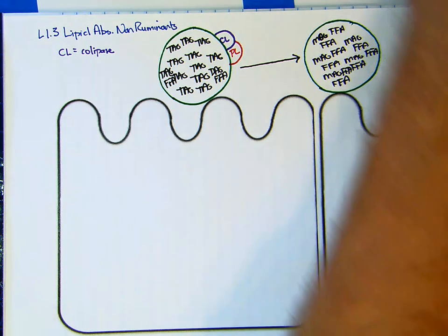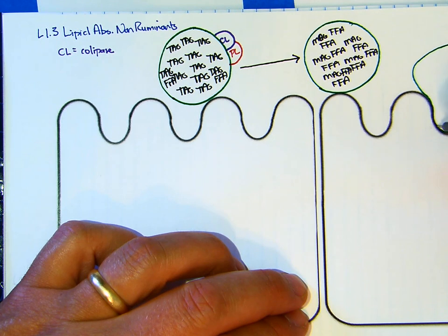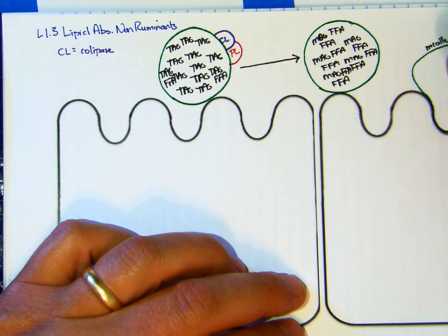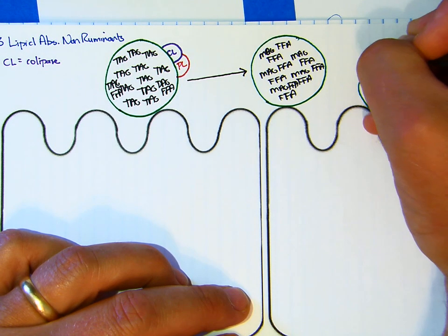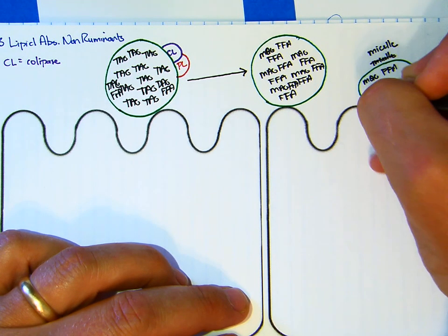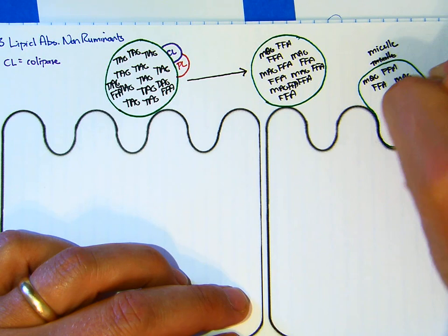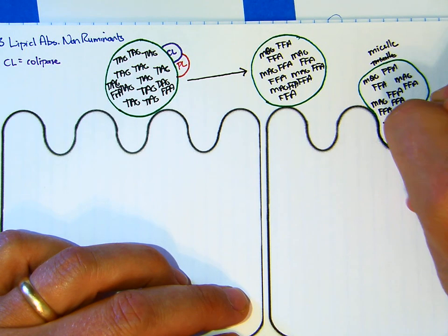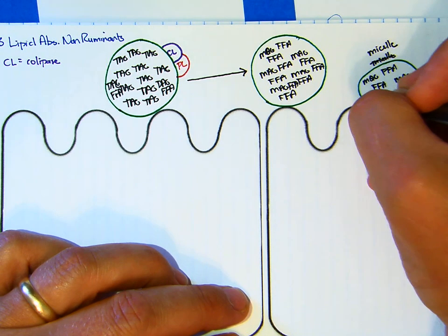This fat droplet is a micelle, and it's going to go interact with the microvilli. That's how we're going to depict it interacting. This micelle again has mag and free fatty acids.